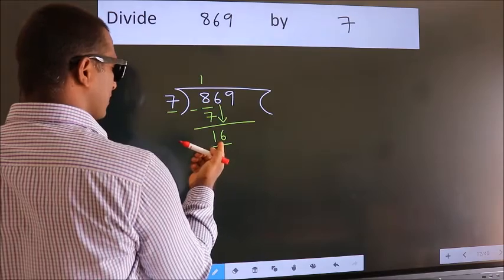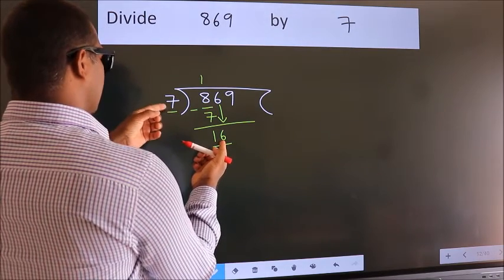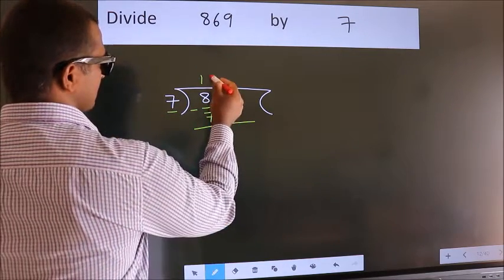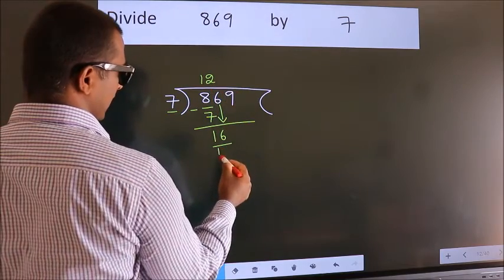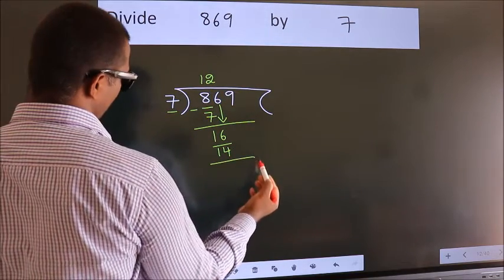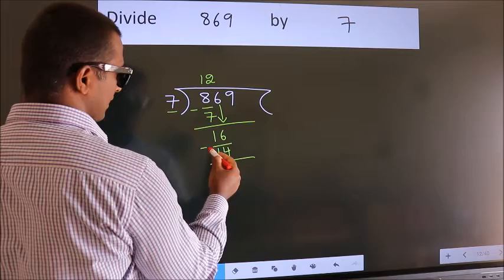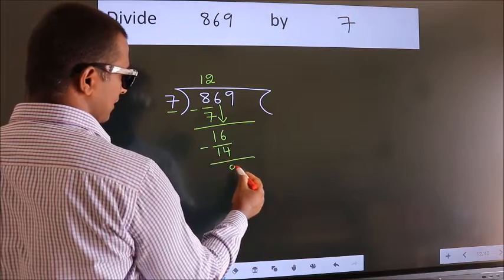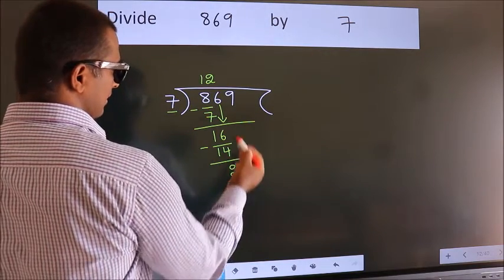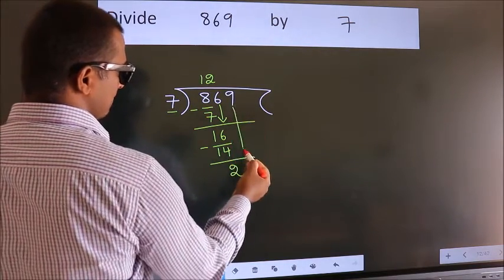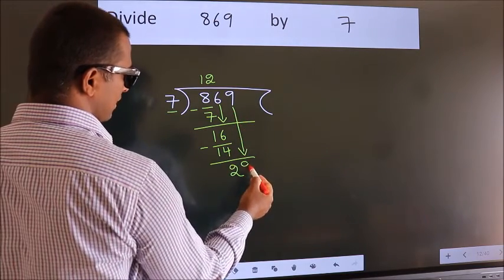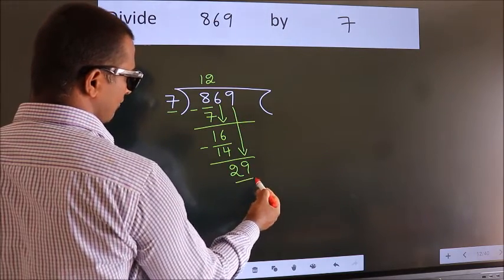A number close to 16 in the 7 times table is 7 twos 14. Now we subtract — we get 2. After this, bring down the beside number. So 9 down, giving us 29.